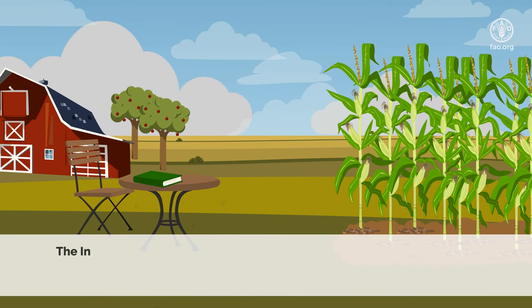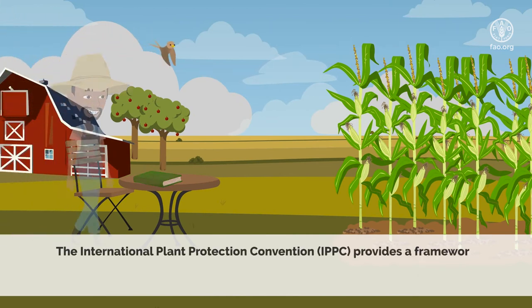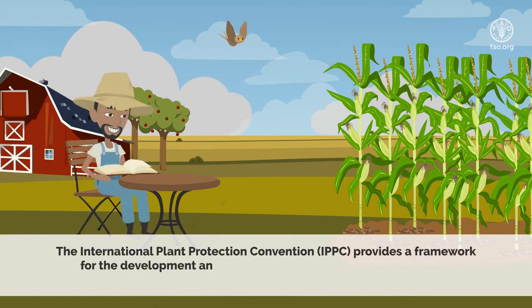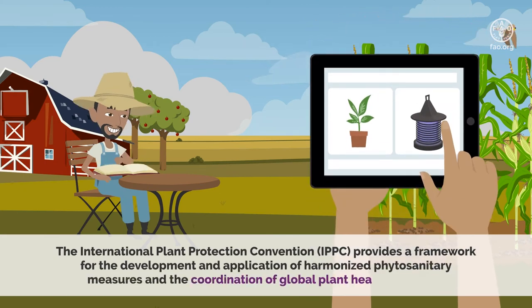The International Plant Protection Convention provides a framework for the development and application of harmonized phytosanitary measures and the coordination of global plant health activities.